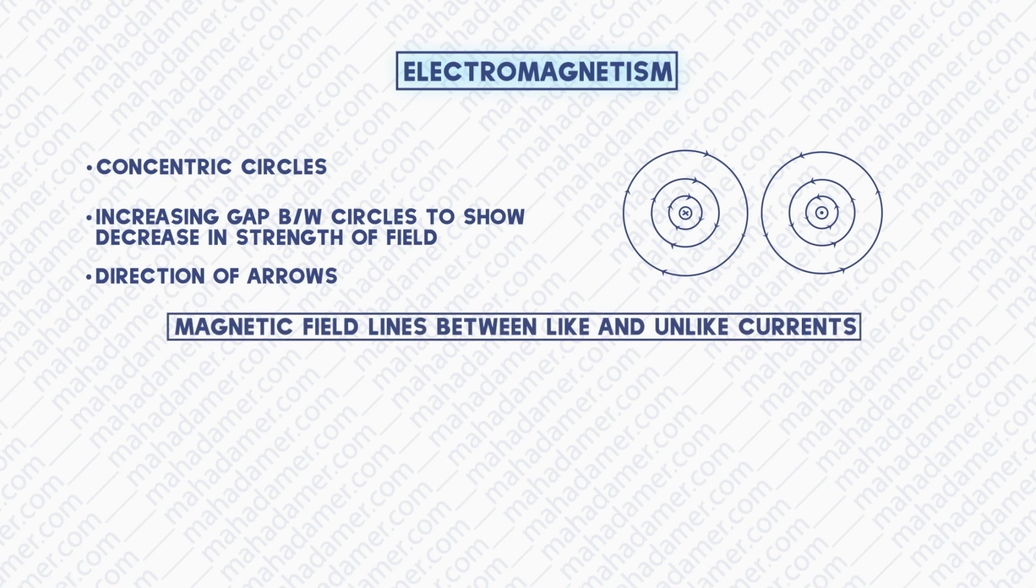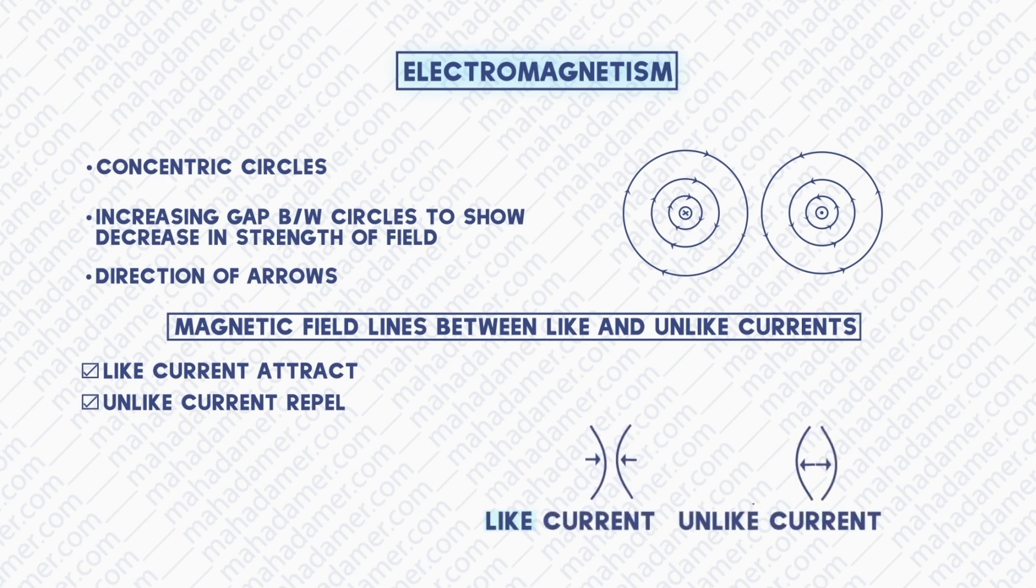When two currents that are going in the same direction are brought together, the two current carrying conductors feel force of attraction between them. For unlike current, they feel a force of repulsion between them.